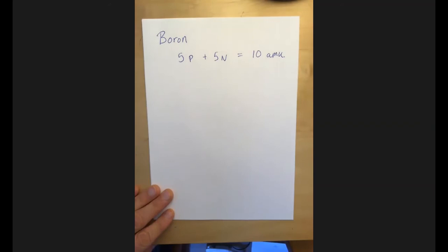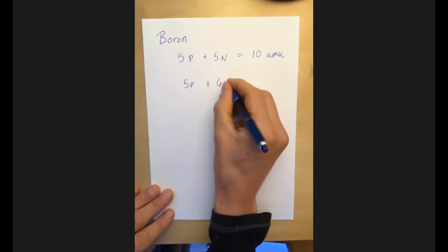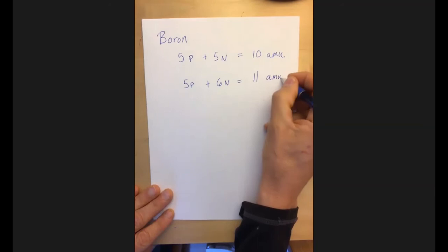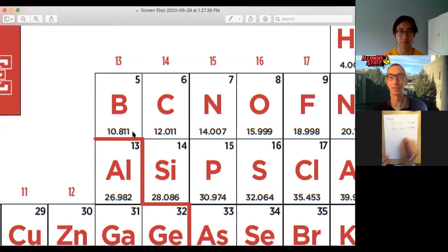But there are some borons. Well, all borons have five protons, but some borons have six neutrons to make a mass of 11 atomic mass units. And as we saw on the periodic table, let's go back to that for just a second. Overall, all boron in the universe is 10.811. So we're headed towards 10.811. So let's bear that in mind.